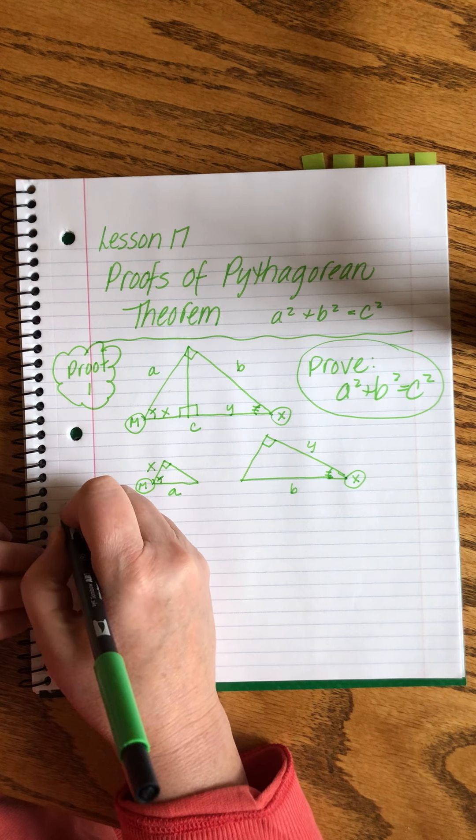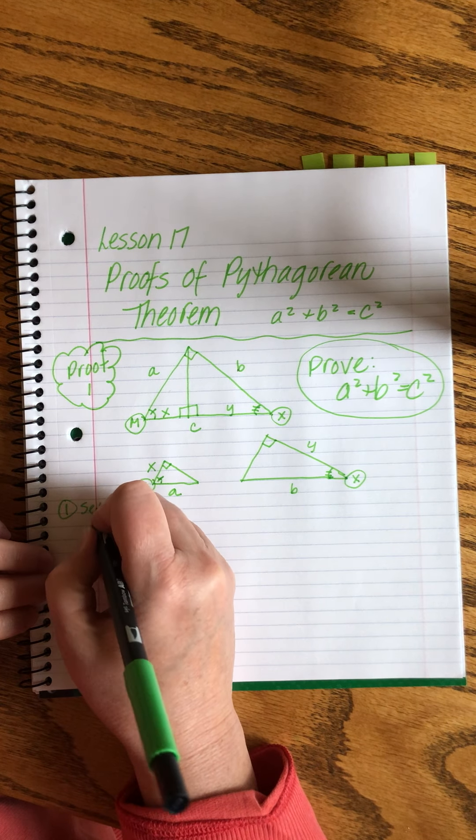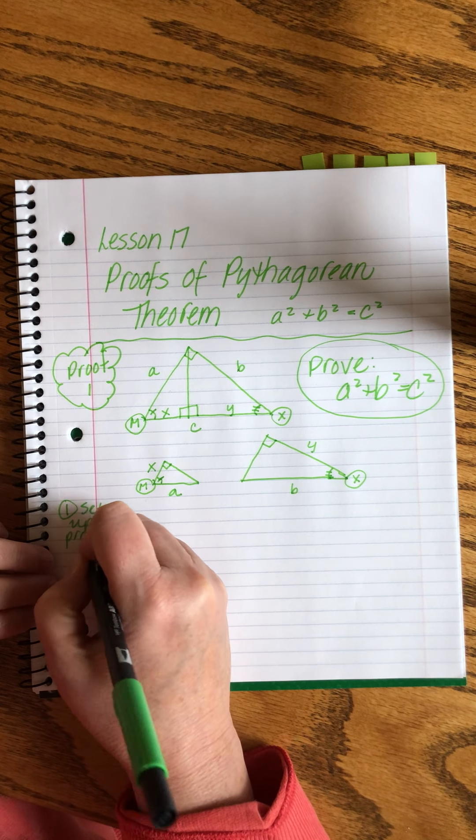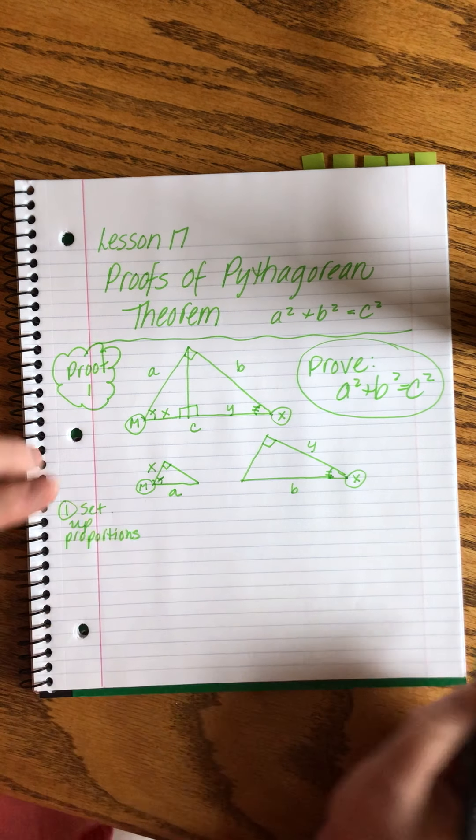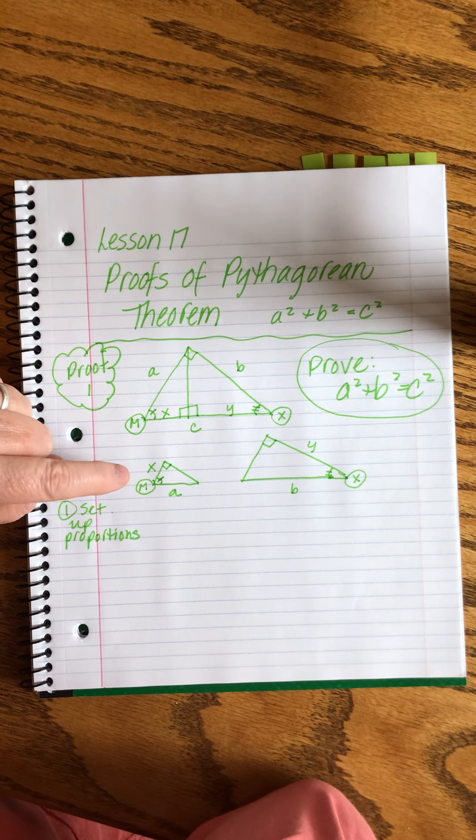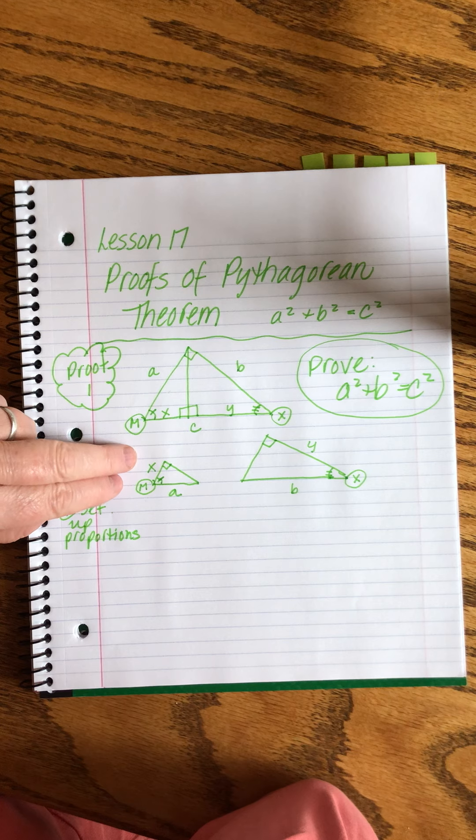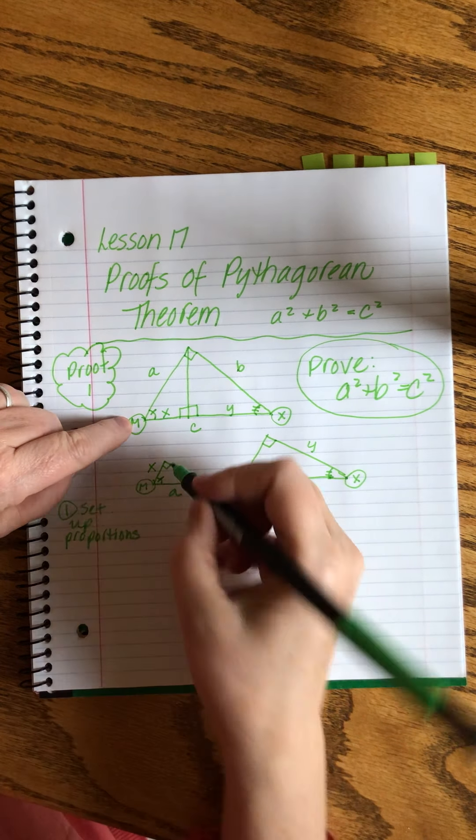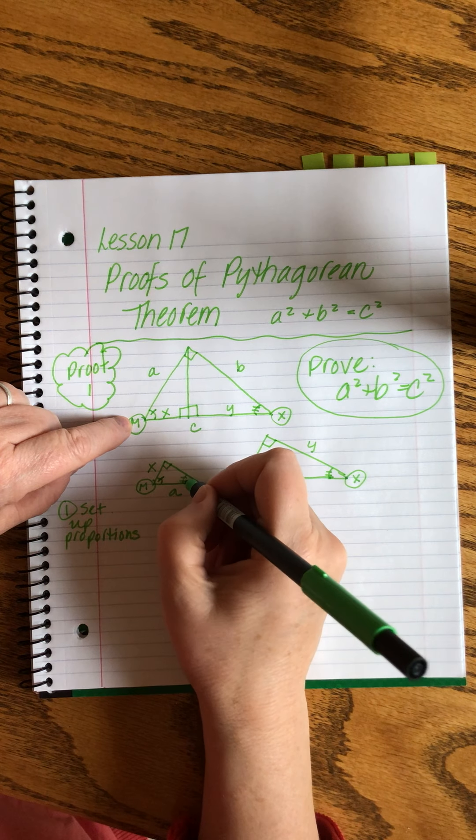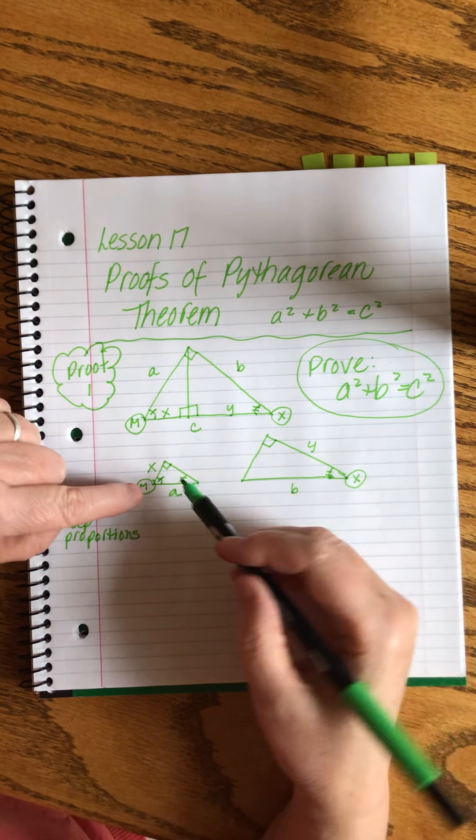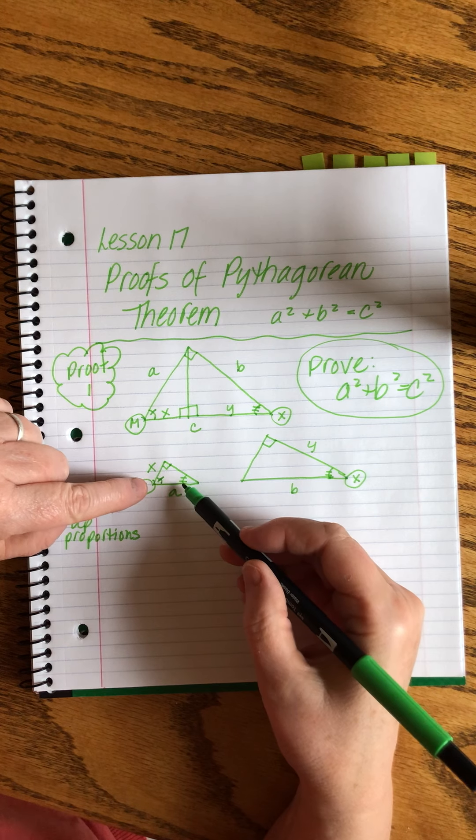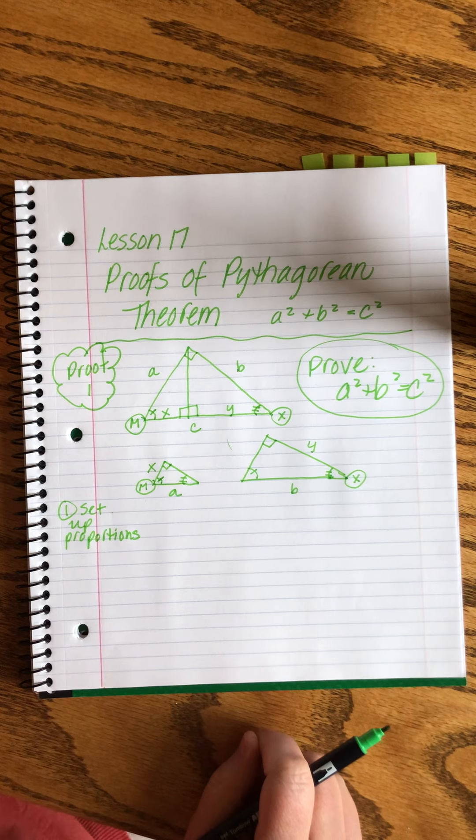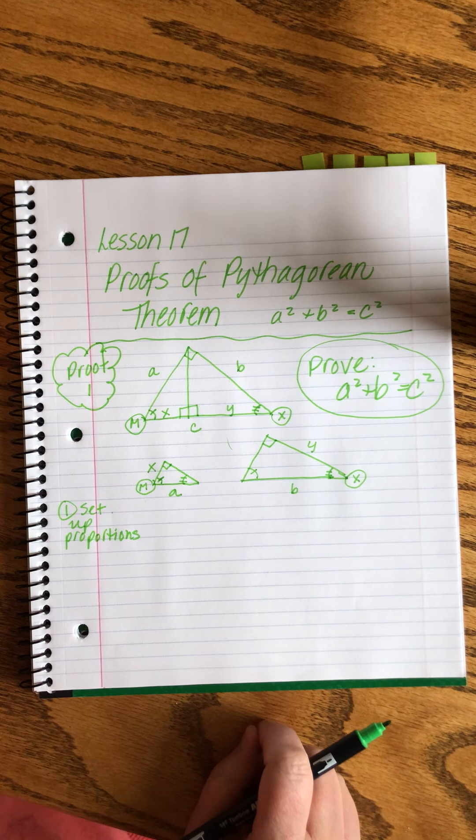All right. So the first thing that we're going to do is we're going to set up some proportions between the sides. We can see that these are similar triangles, right? Because they all have the same angles. Here I've got the right angle and angle one, but I know it's got to be angle two over here because they have to add up to 180. So whatever these two are, they have to add up to 90. And so I can deduce those angles are all the same. Therefore, they're similar triangles.